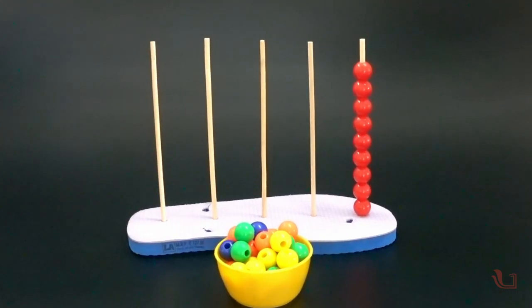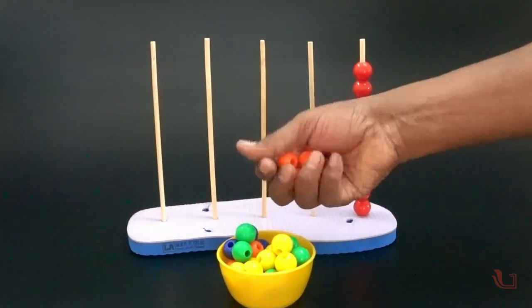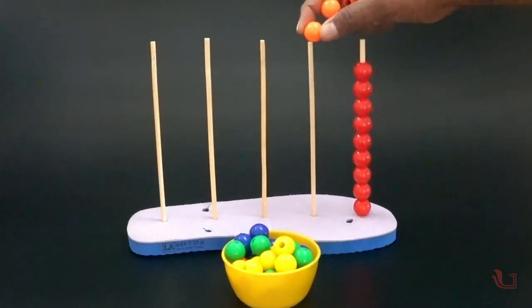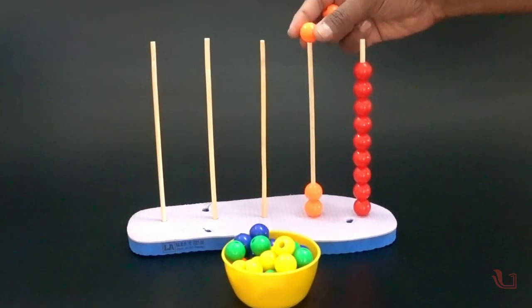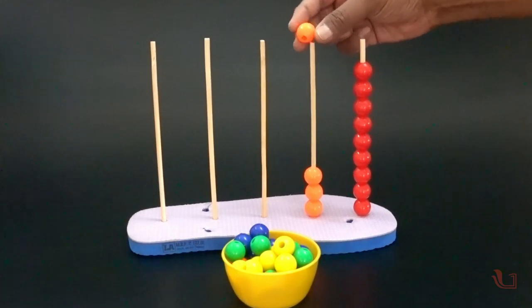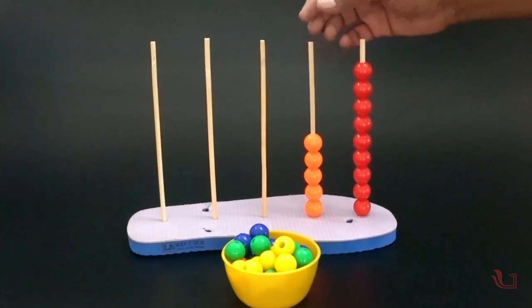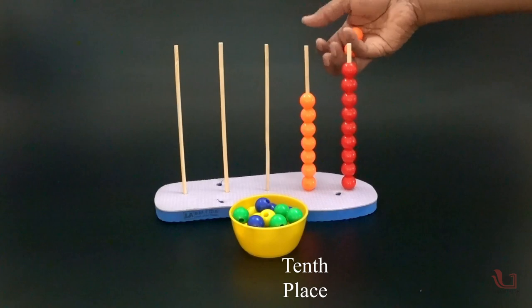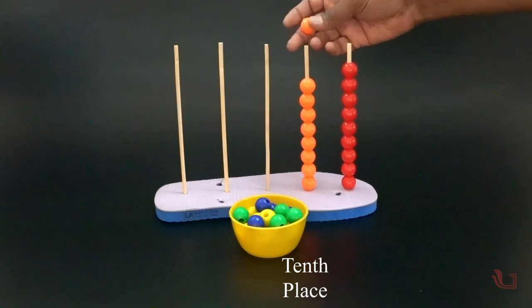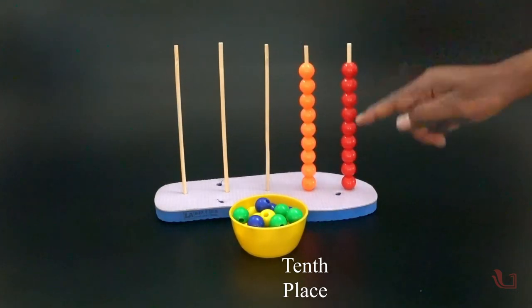Now, take beads of a different color and place them one by one in the second wooden stick. Here, the value of each individual bead is 10. And hence, it's the tens place. We can place only 9 beads in the second stick.